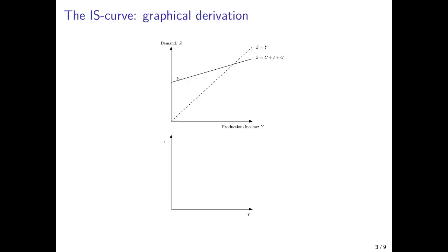We can illustrate this with two graphs. In the first diagram, we have the goods market and the goods market equilibrium, where demand is on the vertical axis and production or income on the horizontal axis. We have the 45-degree line along which there are all the possible equilibria, where aggregate demand is equal to aggregate income and aggregate output. We have the aggregate demand equation, and the goods market equilibrium is at the point where the two curves intersect. Now we assume that the interest rate increases, so there is a shift of the aggregate demand curve downwards, where the demand curve then intersects with the 45-degree line at a lower level of production or income.